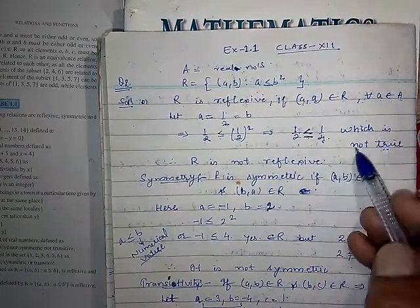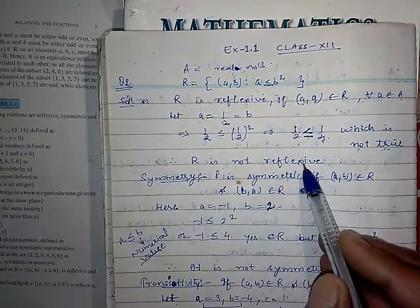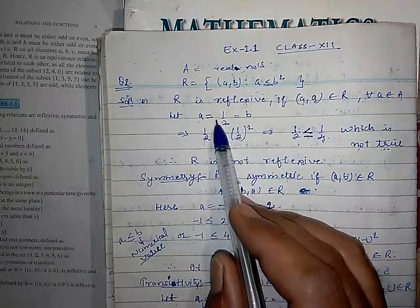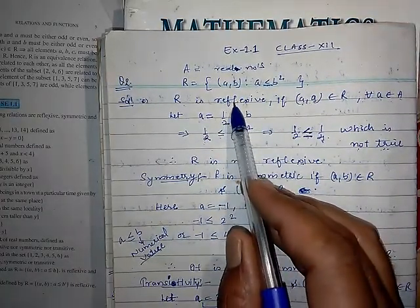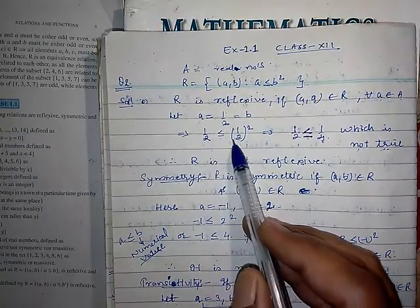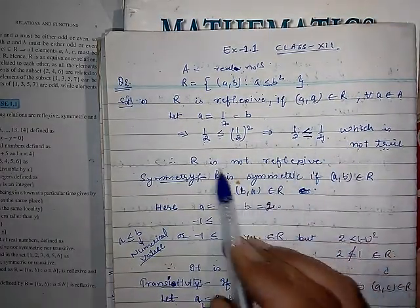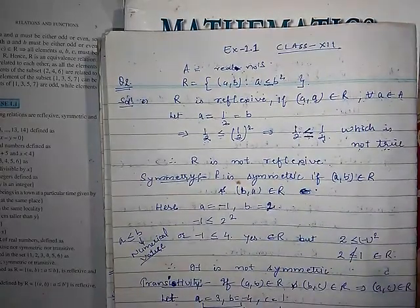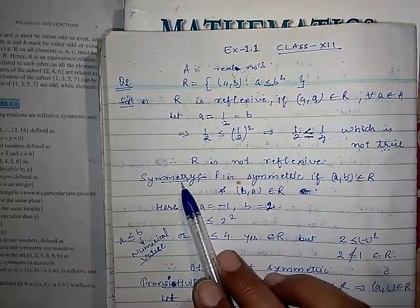No, 1/2 < 1/4 is not true, which means R is not reflexive. Even if there are other numbers for which it is reflexive, at least this one number shows it is not — so the whole relation is not reflexive.